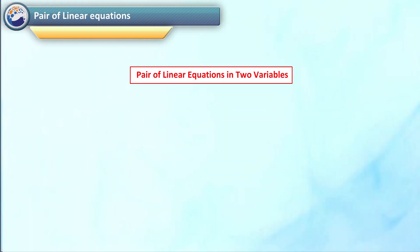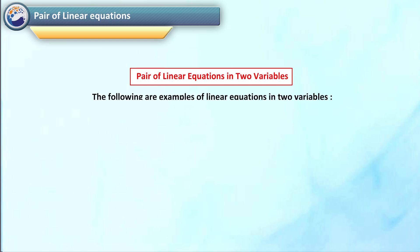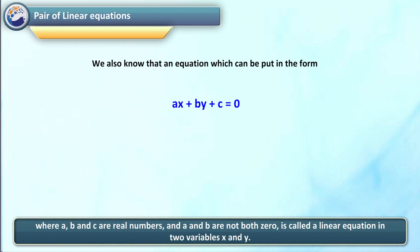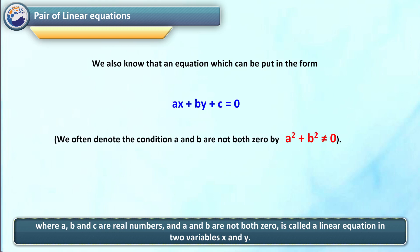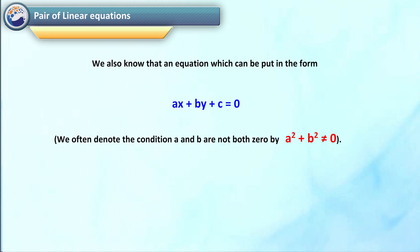The following are examples of linear equations in two variables: 2x plus 3y is equal to 5; x minus 2y minus 3 is equal to 0; and x minus 0y is equal to 2, that is x is equal to 2. We also know that an equation which can be put in the form ax plus by plus c is equal to 0, where a, b and c are real numbers and a and b are not both 0, is called a linear equation in two variables x and y. We often denote the condition that a and b are not both 0 by a squared plus b squared not equal to 0.